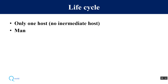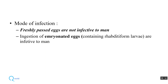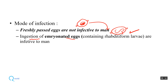Regarding the life cycle, there is only one host with no intermediate host, so this one host acts as both definitive and intermediate host — meaning both adult and larval forms are found in humans. The freshly passed eggs are not infective; they contain only an unsegmented ovum. In the environment, these develop into embryonated eggs containing a rhabditiform larva, and ingestion of these embryonated eggs is the infective form.